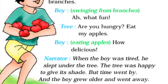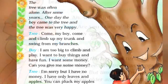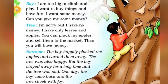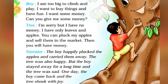But time went by and the boy grew older and went away. The tree was often alone. After some years, one day the boy came to the tree and the tree was very happy. Come my boy, come and climb up my trunk and swing from my branches. 'I am too big to climb and play. I want to buy things and have fun. I want some money. Can you give me some money?' 'I am sorry, but I have no money. I have only leaves and apples. You can pluck my apples and sell them in the market. Then you will have money.' The boy happily plucked the apples and carried them away. The tree was also happy.